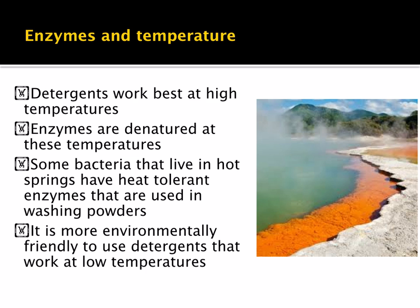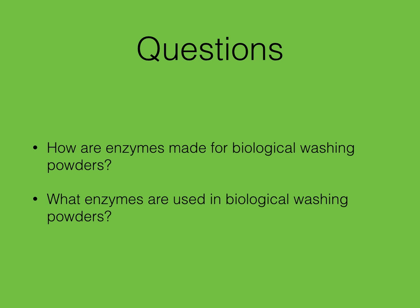Detergents work best at high temperatures, but enzymes are denatured at these temperatures. However, some bacteria that live in hot springs have heat-tolerant enzymes that are used in washing powders. It is more environmentally friendly to use detergents that work at low temperatures. Review questions: How are enzymes used in biological washing powders, and what enzymes are used in biological washing powders?